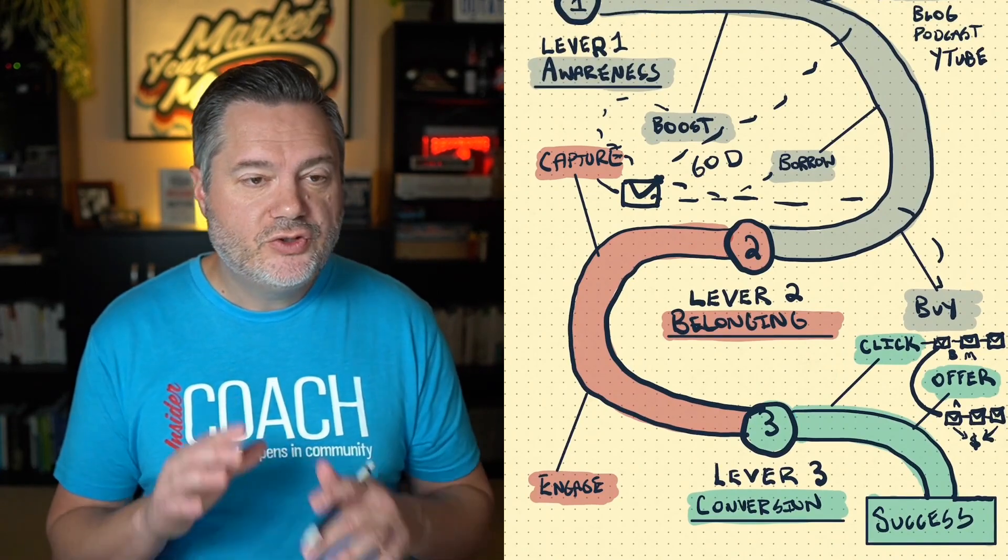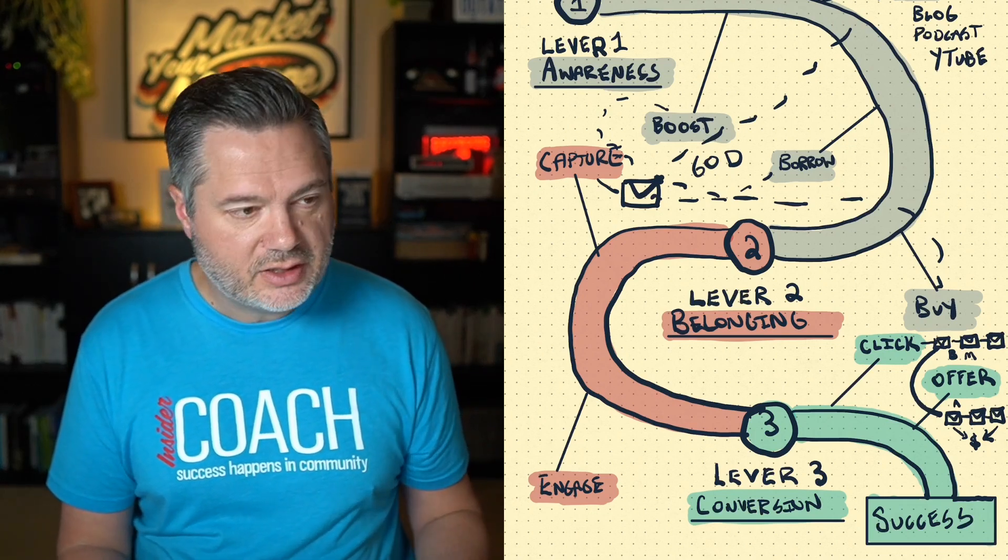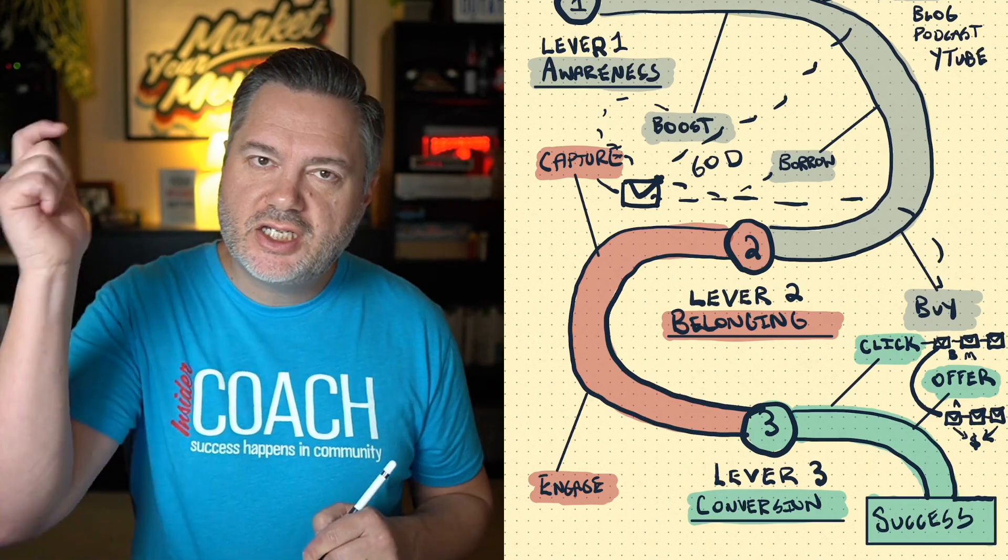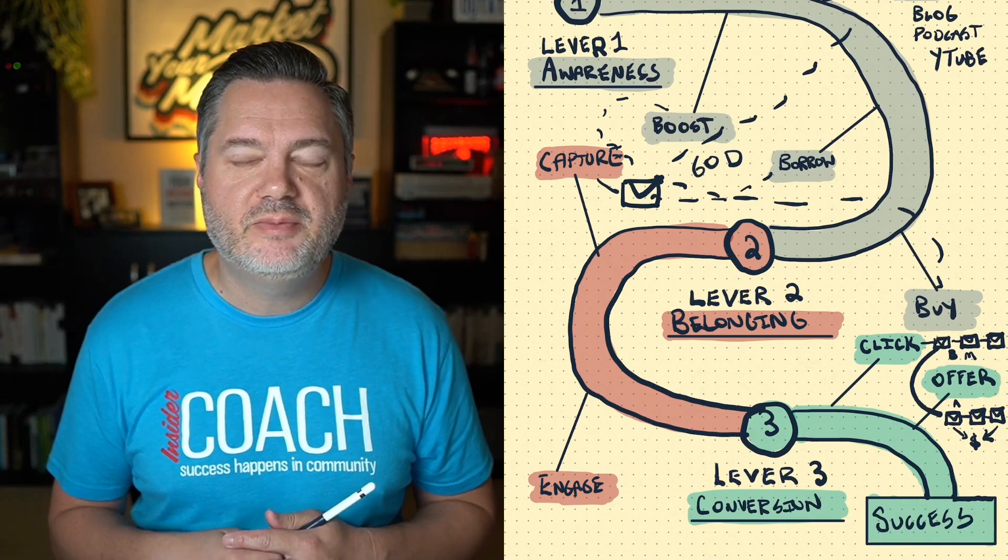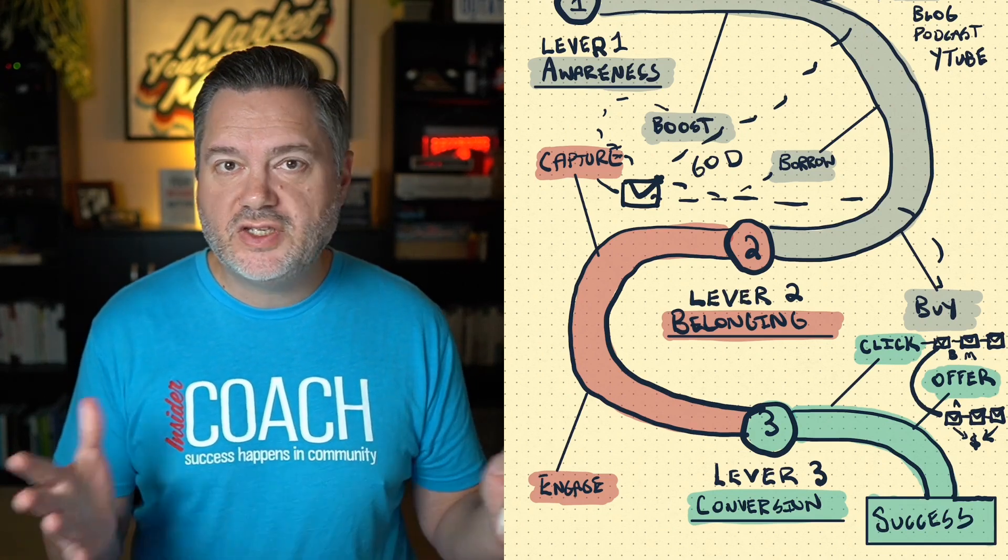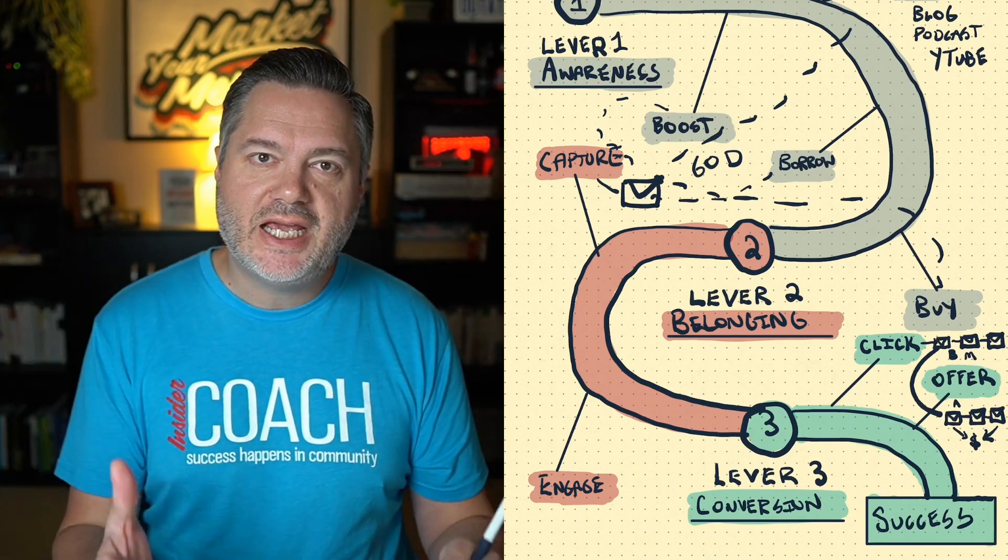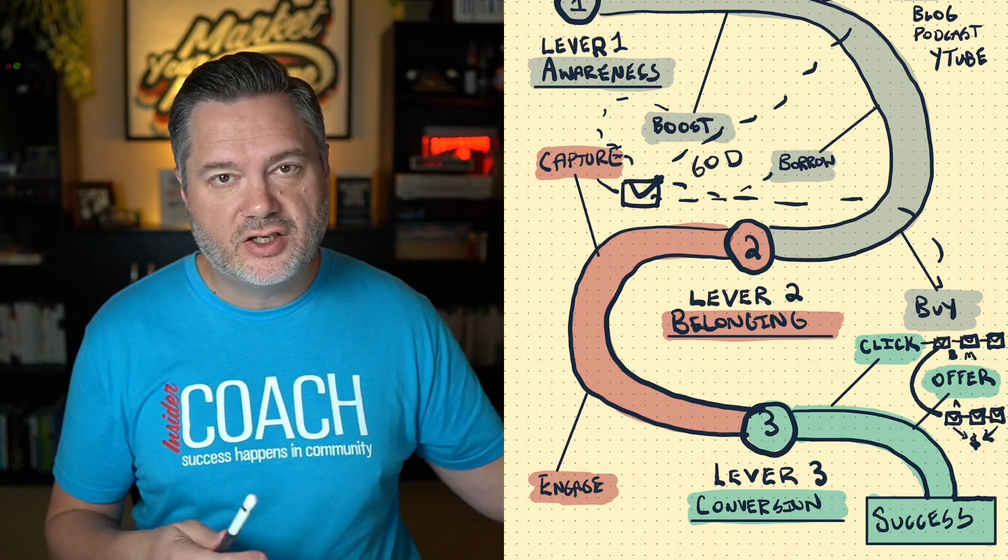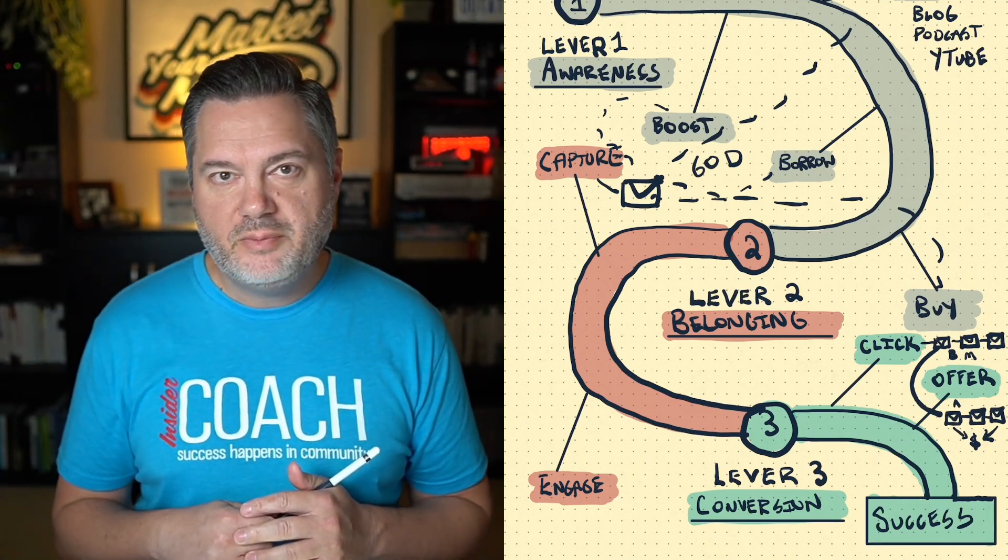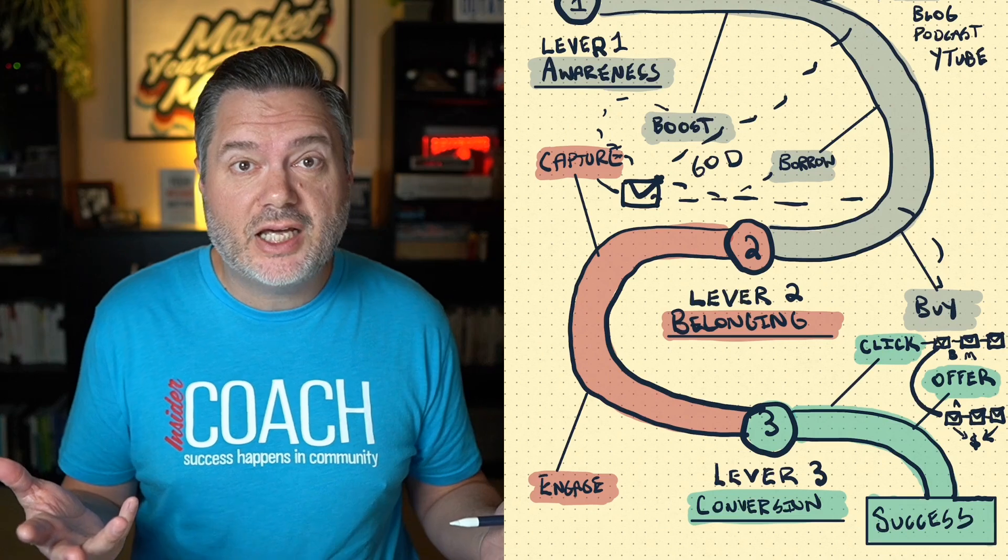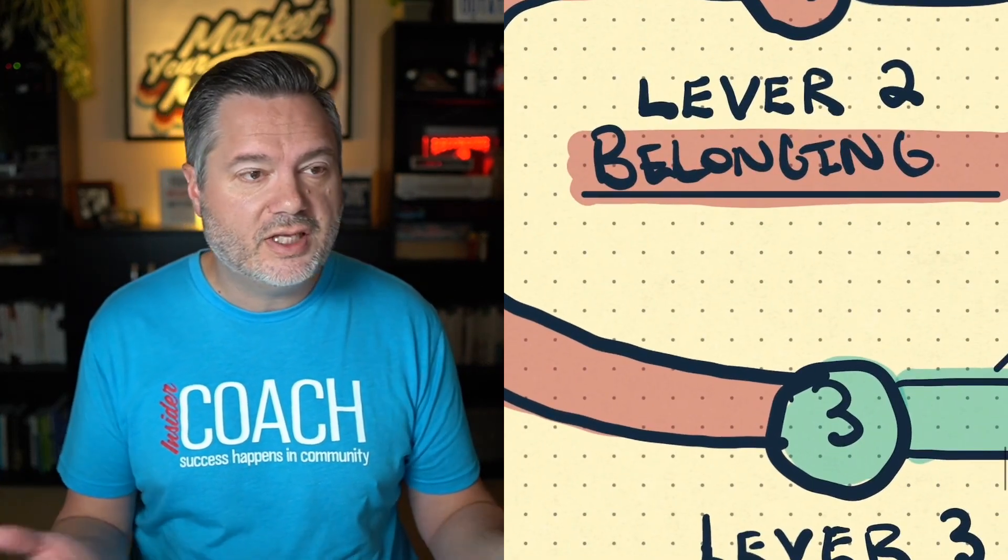So to recap really quickly, you've got awareness, belonging, conversion. Let me ask you a question and comment below. Which of these levers do you need to be focusing on right now? Maybe you just need to spend some time under awareness. And we just need to spend 60 days building that business. I'd encourage you to check out the book, Build Your Audience. It will help you with that awareness piece. Or maybe you're like, Jonathan, I'm doing things that got awareness, but I don't have an email list. Then you, my friend, need to focus on lever two, belonging.